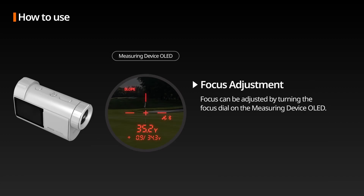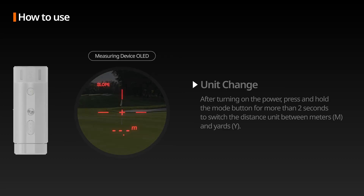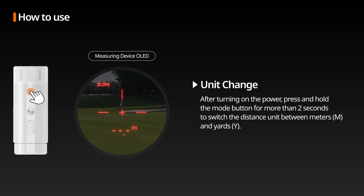Focus Adjustment: Turn the focus dial of the measuring device left or right to adjust the OLED screen for a clearer view. Unit Change: While the power is on, press and hold the mode button for more than 2 seconds to switch between meters and yards.